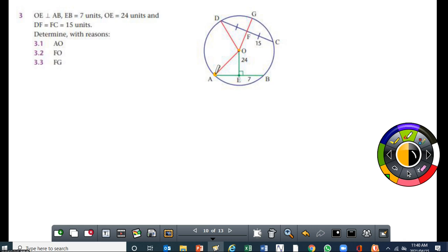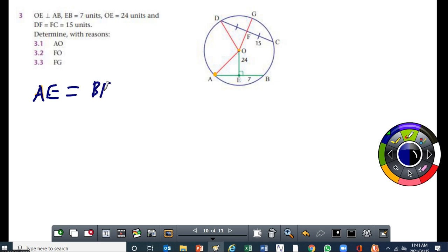It's not specified what the length of AE is, therefore I have to use theorem 1 to get the length of AE. The first thing that I would suggest that you do is to say AE is equal to BE. The reason is line from center perpendicular to chord.